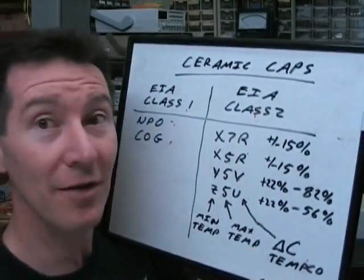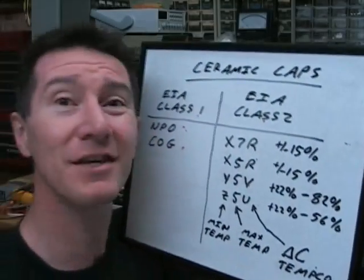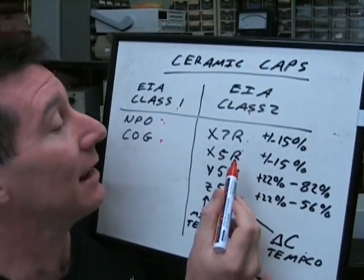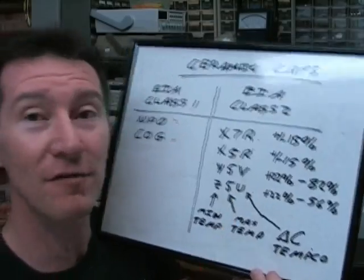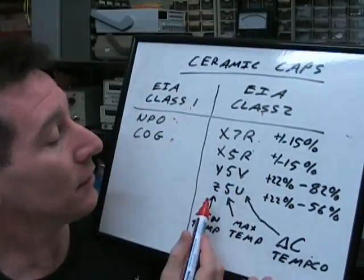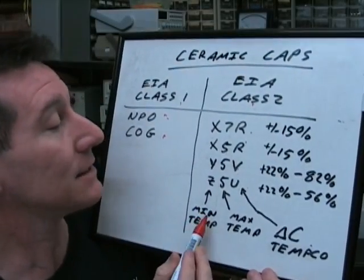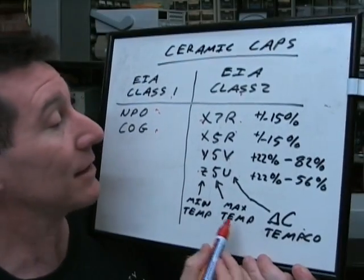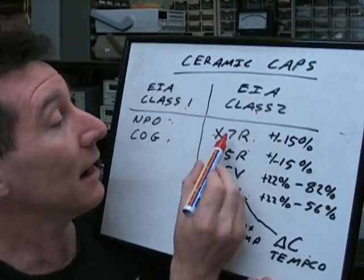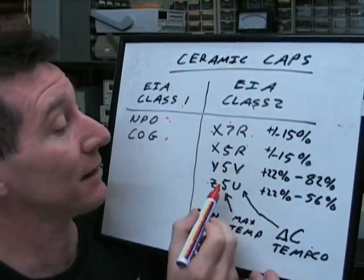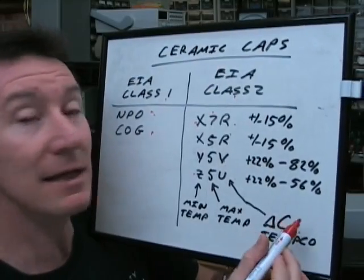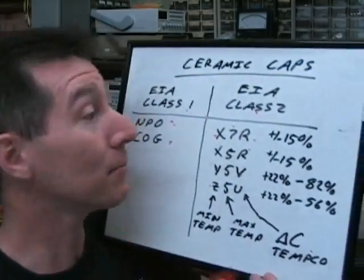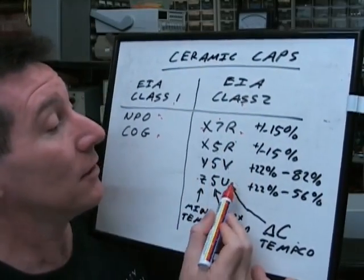The second type is Class 2 capacitors, and there are more varieties than you can poke a stick at. Some of the more common ones: you'll hear terms like X7R, X5R, Y5V, Z5U. This is a code. The first character denotes the minimum temperature — X is better than Z. The second character defines the maximum temperature, and a higher number is better — 7 is better than 5. The third character is the temperature coefficient: how much change in capacitance you get over that temperature range. R is better than U.